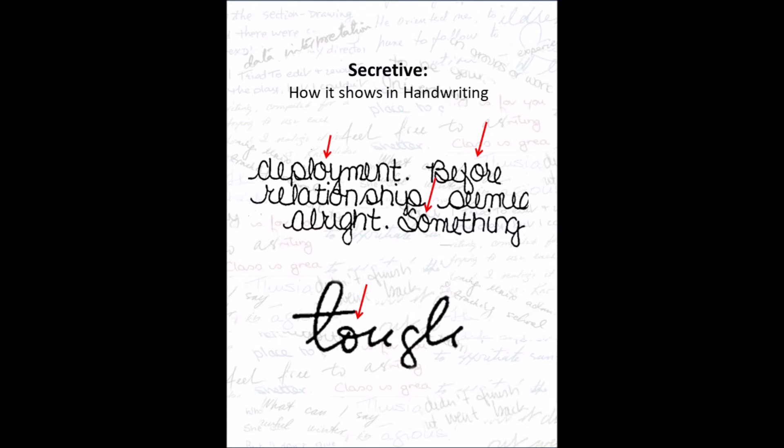The circle letters are A, O, the circle part of D, and the circle part of G. In the samples below, it shows only in the O's, which are the most common letters in which to find secretiveness.